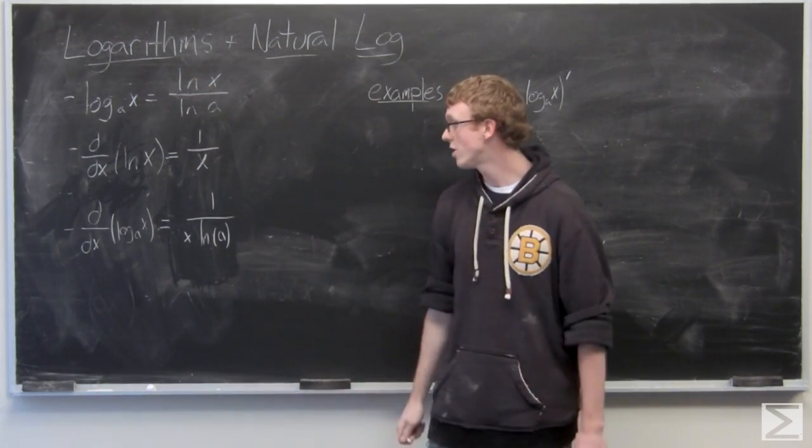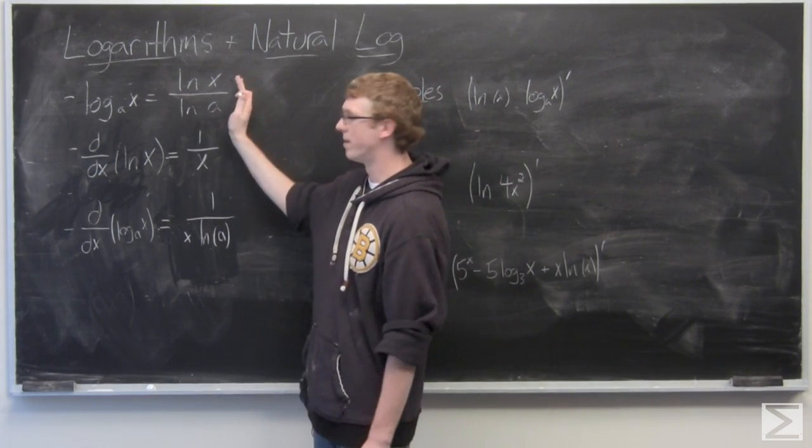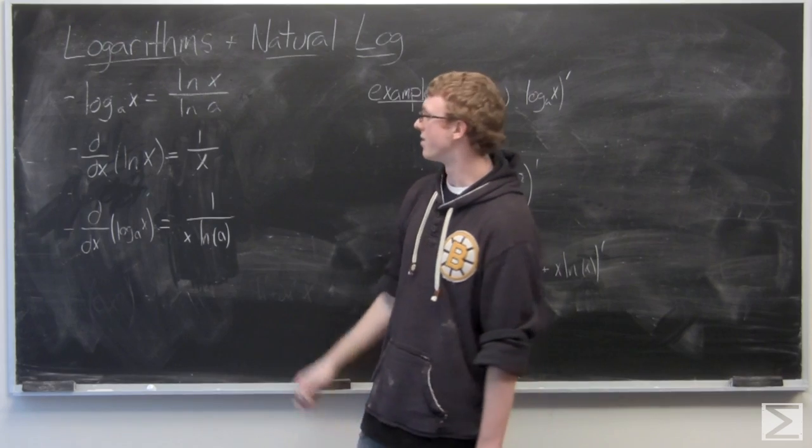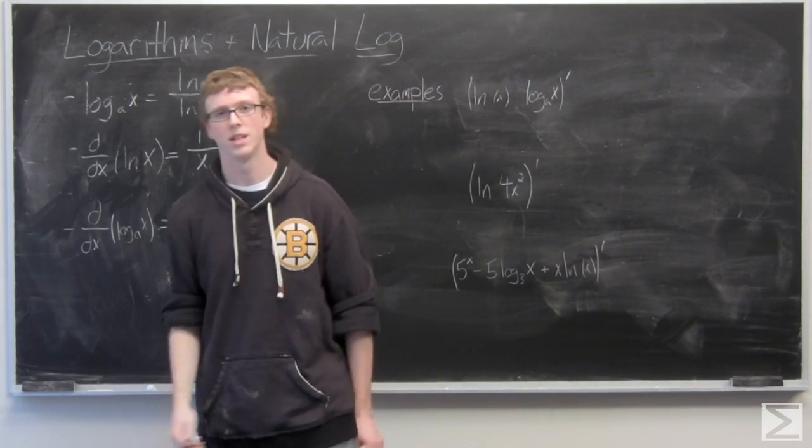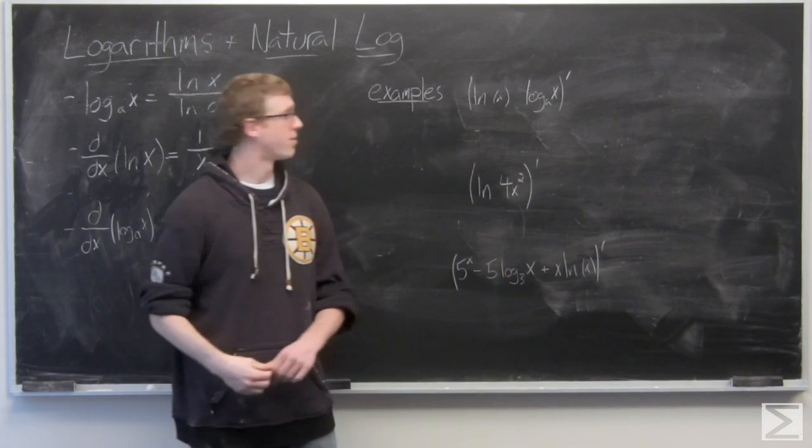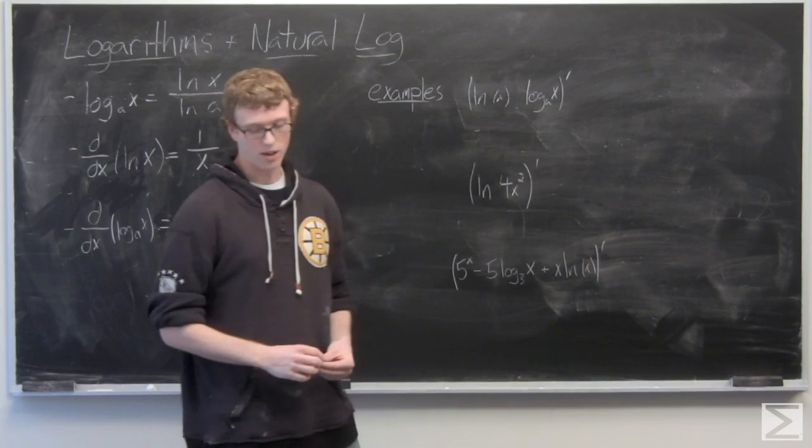The constant doesn't change, we still have ln a in the denominator, and we have it multiplied by one over x because that is the derivative of what's in the numerator. Now we're going to go ahead immediately and take a look at just some examples involving natural log and logarithm, maybe one or the other.